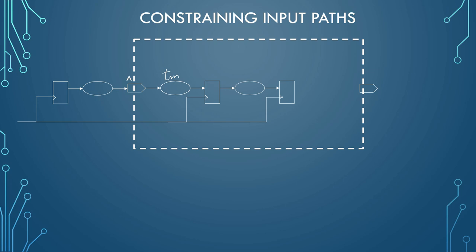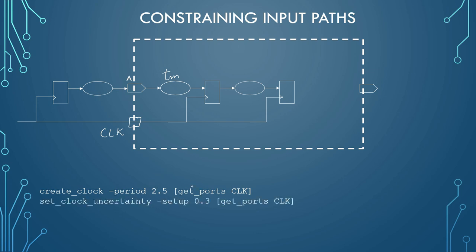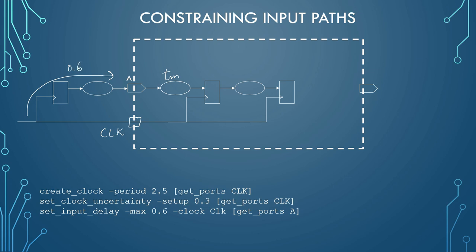We are giving you an example here to calculate the value of this combinational logic, which you have to calculate on your own. Based on the constraints we are defining now, you are supposed to calculate the TM value. We have a clock period of 2.5 nanoseconds on the CLK port, clock setup uncertainty of 0.3 nanoseconds, input delay maximum of 0.6 nanoseconds, and library setup time of 0.1 nanoseconds at the flip-flop FF1 and all other flip-flops from the same library.